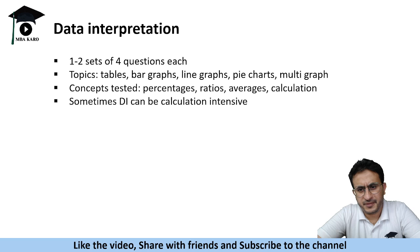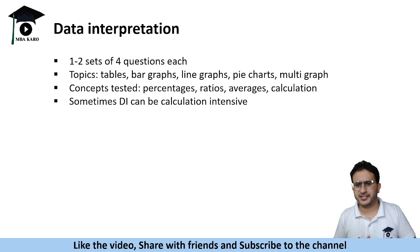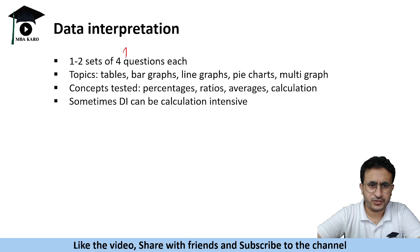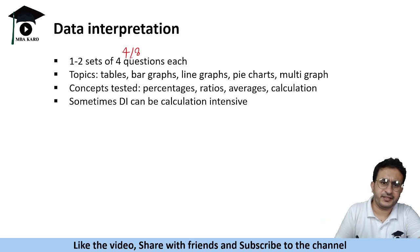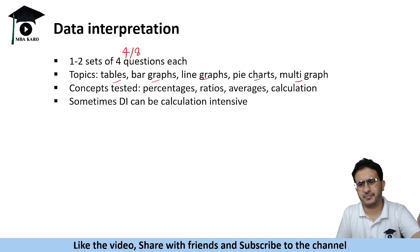First and foremost data interpretation. If you are a CAT aspirant then you see DILR is a separate section, but in NMAT DI is a part of quant. You get one or two sets of four questions each, that means four or eight questions of DI. The data sets are based on tables, bar graphs, line graphs, pie charts or multigraph. By multigraph I mean combination of two graphs like pie chart plus bar graph, bar graph plus line graph. That is what is tested, conventional graph types.